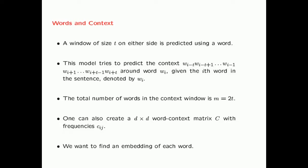In Word2Vec, you have words and context. The idea is that you create these contextual windows which are contiguous windows in sentences. You use a window of size t on either side of a word, and you're trying to predict a window of size t on either side using a word. So essentially, if you index the words in a sentence sequentially by subscript, then given the ith word wi, you're trying to predict wi-t through wi-1 on the left side and wi+1 through wi+t on the right side. The total number of words in the context window is m equals 2t.